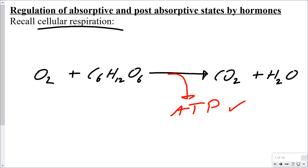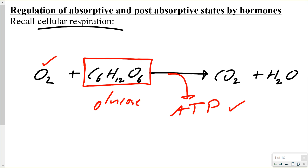You need to take in oxygen through your respiratory system and glucose through your digestive system. That's why the title for this lesson is regulation of the absorptive state. When you take food into your mouth, you break it down through your stomach and intestines, absorbing building blocks of fats, carbohydrates, and proteins, which enter your blood. This leads to changes in glucose, amino acids, and fatty acid levels — that's the post-absorptive state.